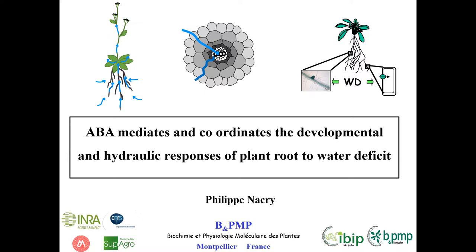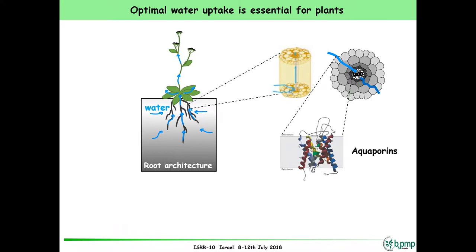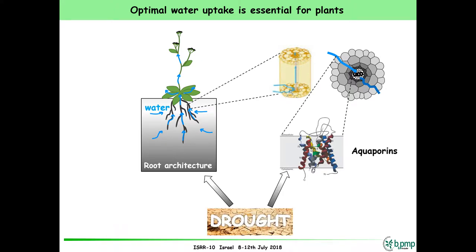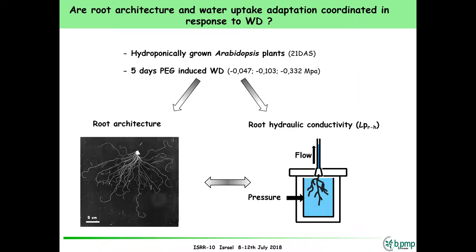As everybody knows, water is extremely important for plants. Water is taken up from the soil by the root system, and then it's transported to the leaves and to the shoots of the plant. Going back to the roots, water has to be transported from the outer part of the soil to the vascular tissue through two main pathways: an apoplastic way between the cells until the pericycle, and another way going through the cells — the symplastic transport.